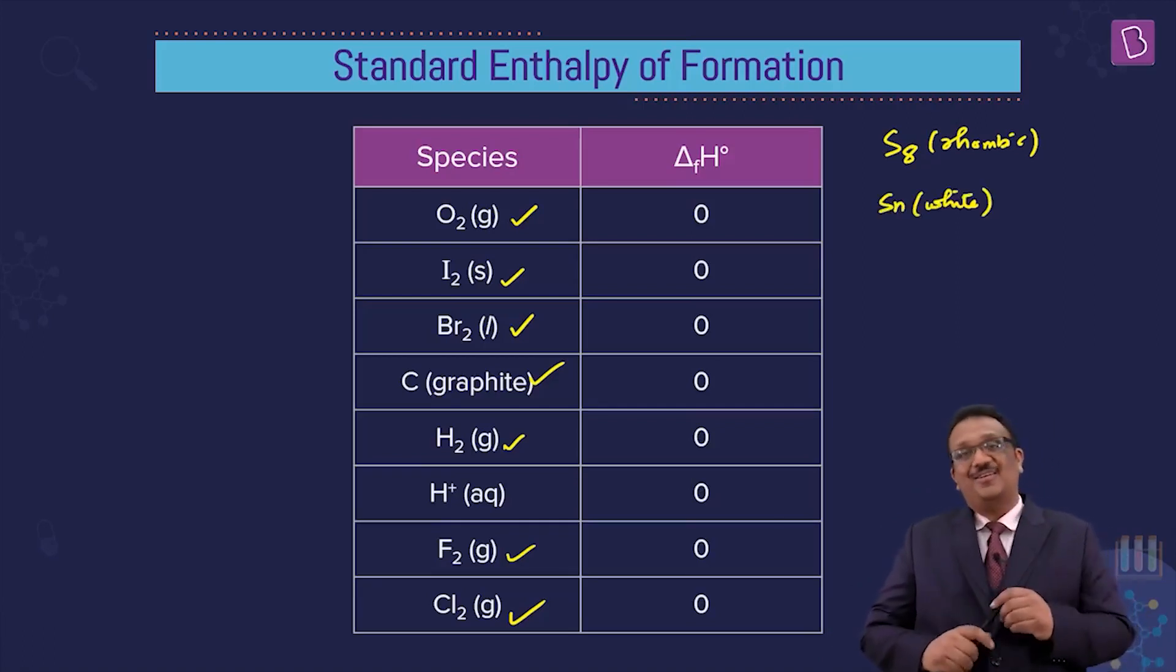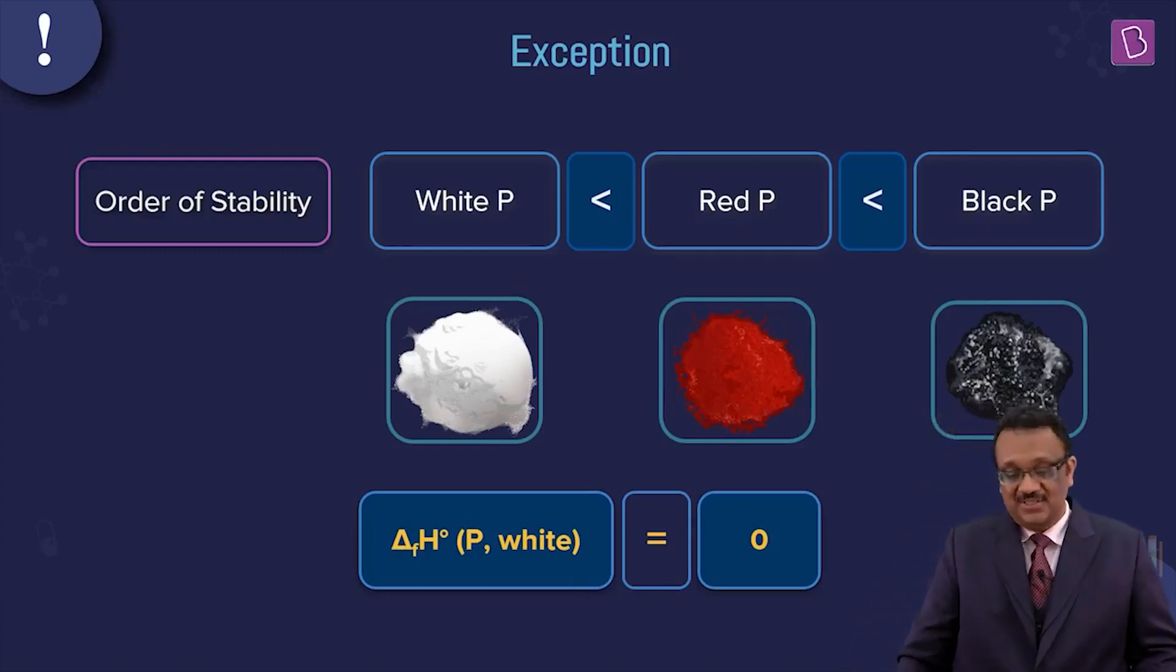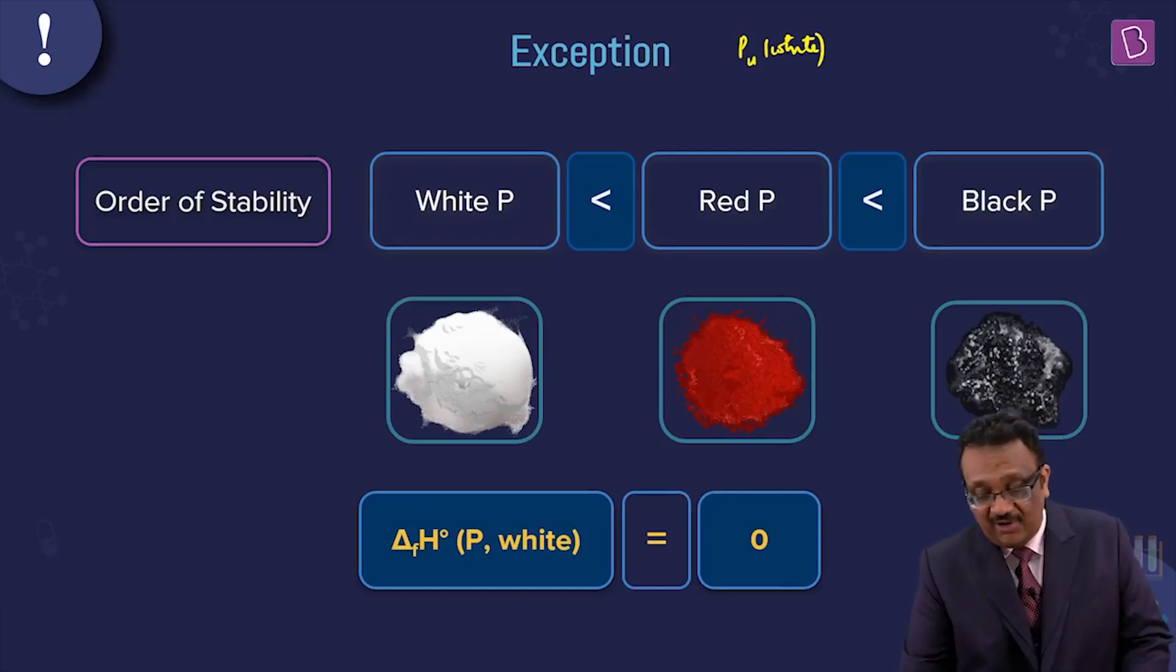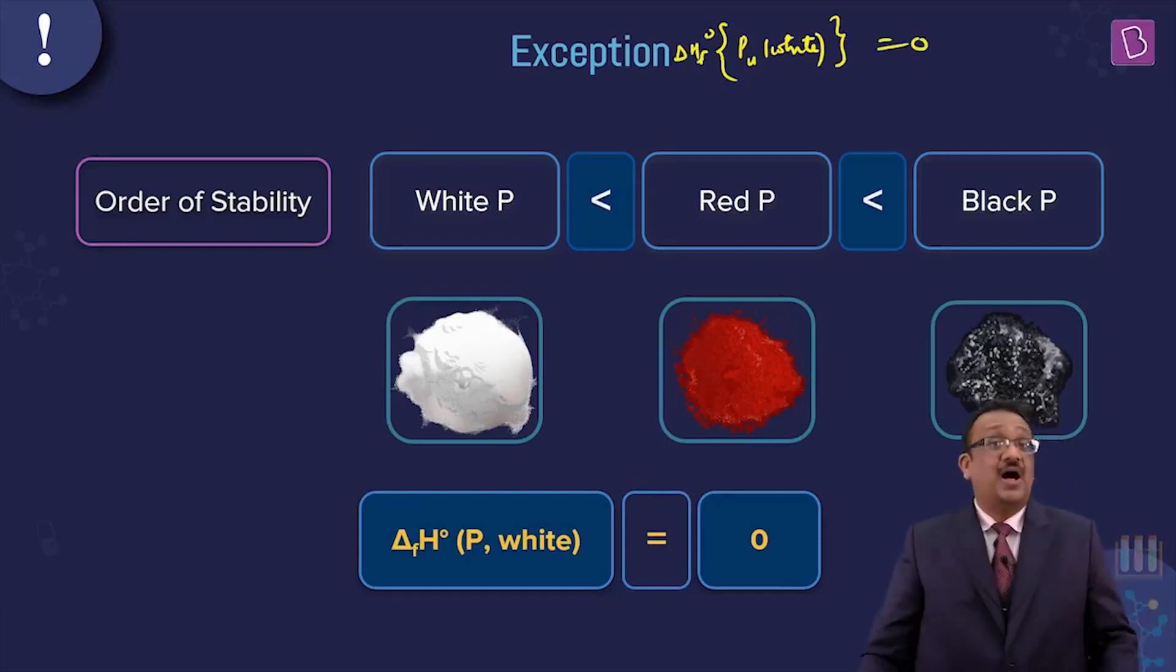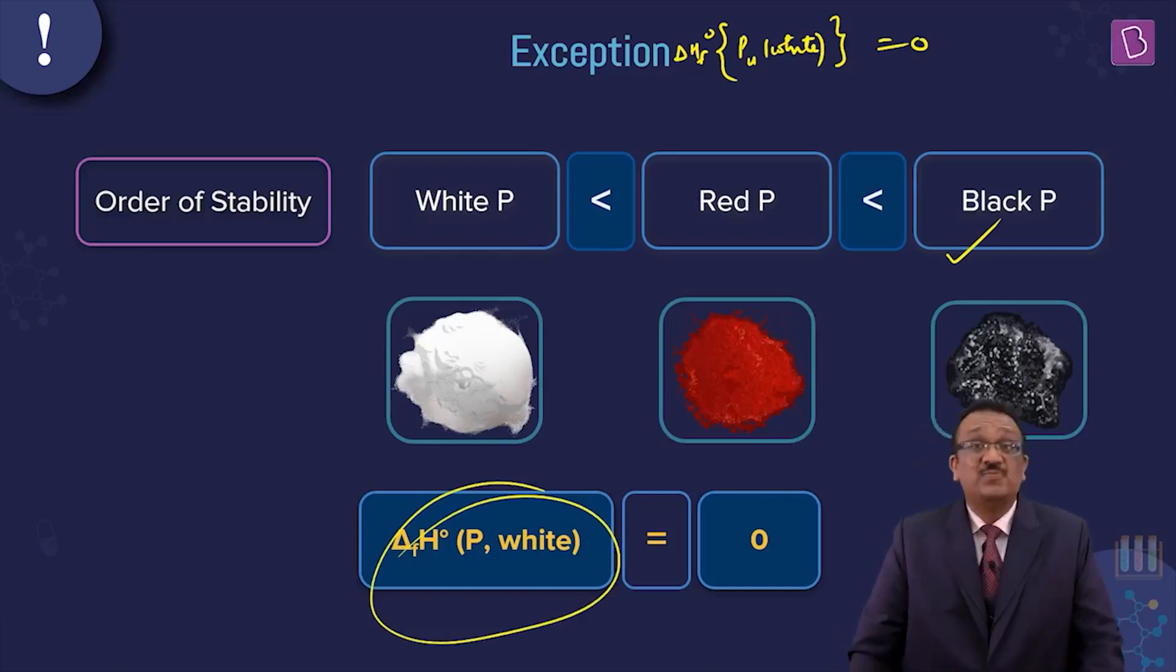White metallic tin is standard state at 25 degrees Celsius and 1 atmosphere. Phosphorus is a rare exception. Most unstable white phosphorus, P4 white, in spite of being most unstable, is arbitrarily chosen as standard state. The enthalpy of formation of white phosphorus is arbitrarily assumed to be zero. It is arbitrarily chosen as a standard state by IUPAC. Red is more stable and black is more stable, but white phosphorus is an abnormal case.